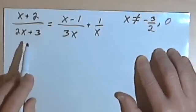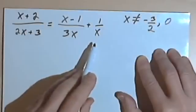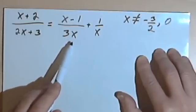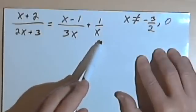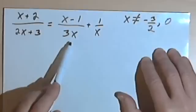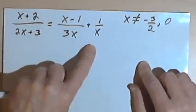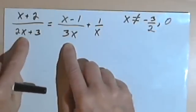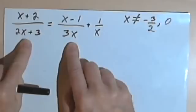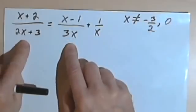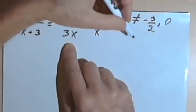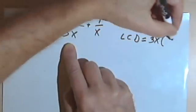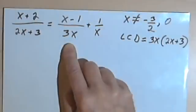The second step is to see if there's anything I can factor, but there isn't — I can't factor any of these denominators. So now I have to find the lowest common denominator. On the right side I've got 3x and x, and I can turn x into 3x by multiplying by 3, so those two share an LCD of 3x. But I can't turn 2x plus 3 into 3x or vice versa by multiplying, so my overall LCD is 3x times 2x plus 3.